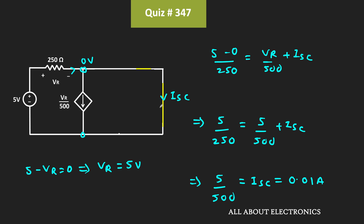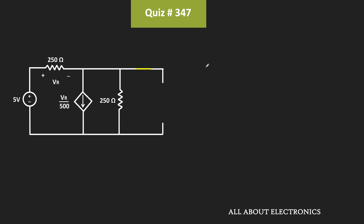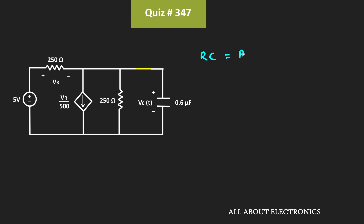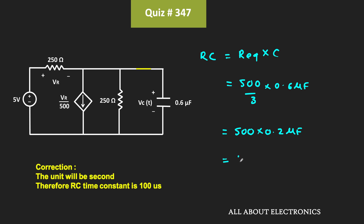The Thevenin equivalent resistance seen through the capacitor terminals equals Voc / Isc = (5/3 V) / (0.01 A) = 500/3 Ω. So the RC time constant is R_eq × C = (500/3) × 0.6 μF = 100 μs = 10^(-4) s.